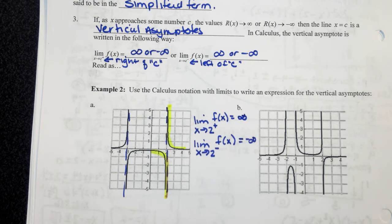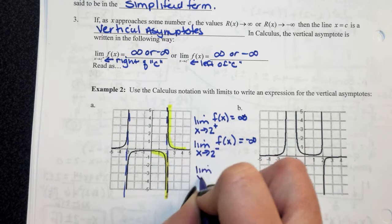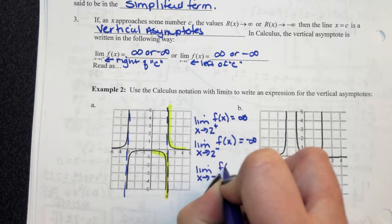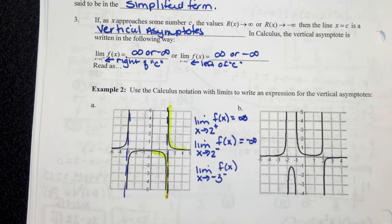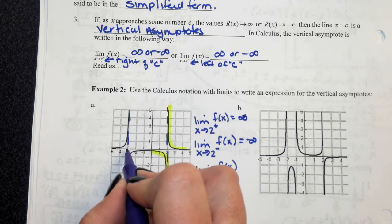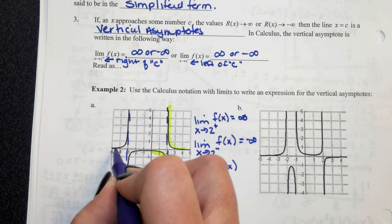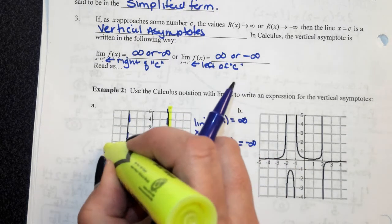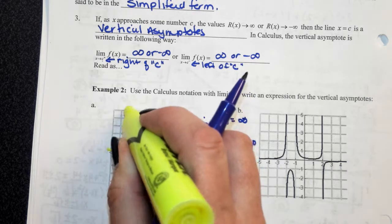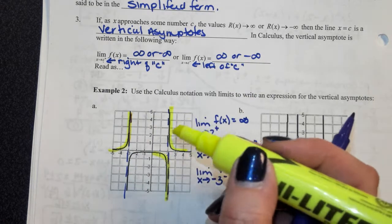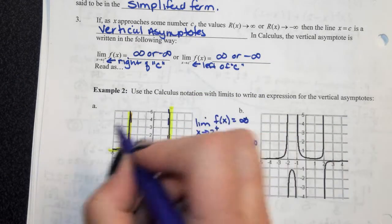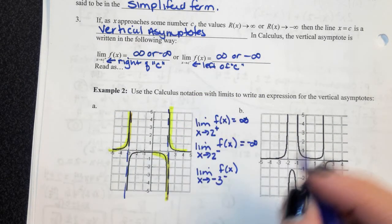If I ask you to find the limit as x approaches an asymptote, you're looking at the behavior — whether it's going towards positive or negative infinity. Now let's look at the limit as x approaches negative 3 from the left. My vertical asymptote is at negative 3. Go to the left of negative 3 and trace your graph. As you're getting closer and closer to negative 3 on the left-hand side, you're going towards positive infinity.